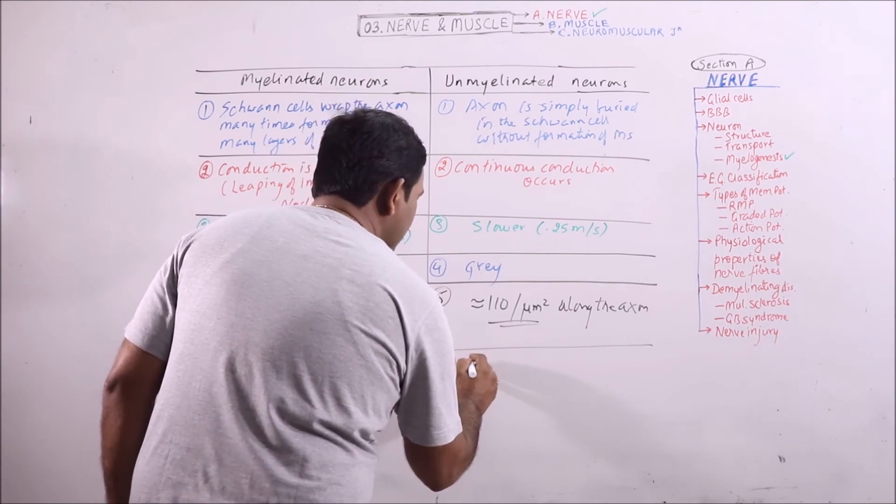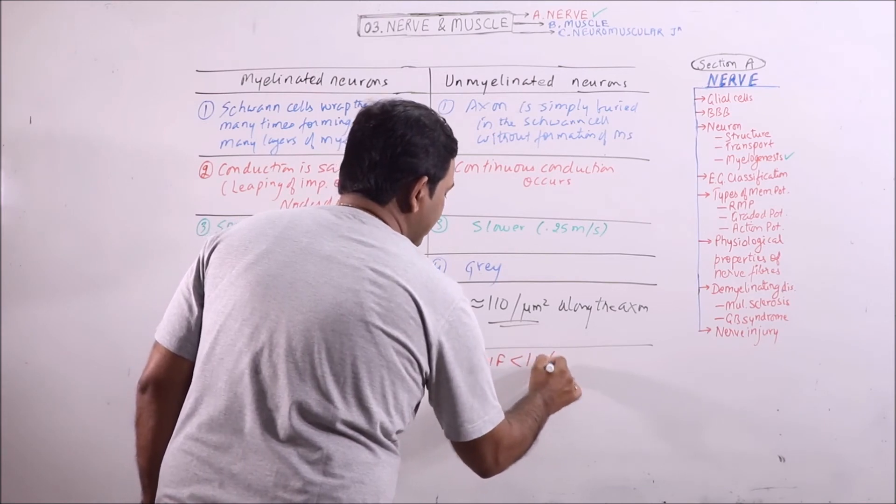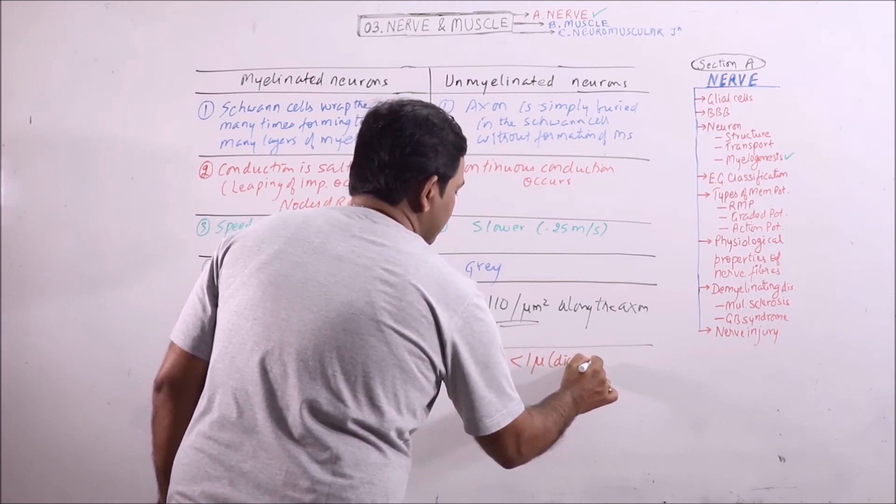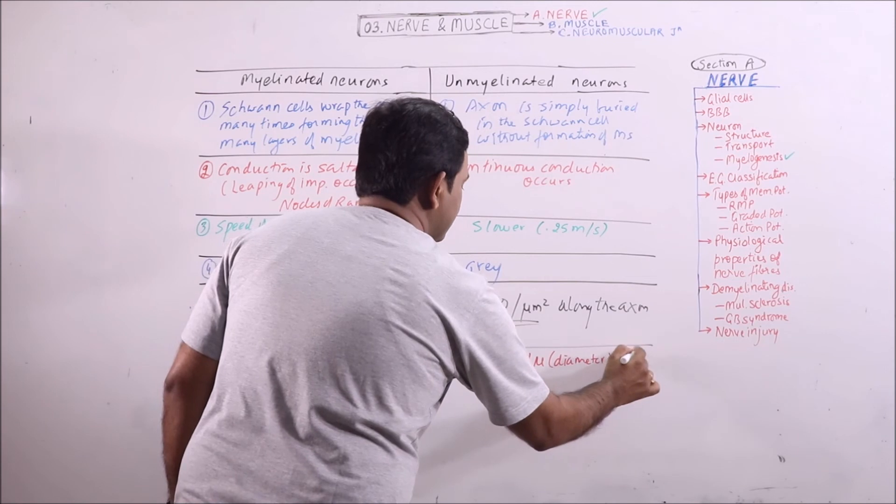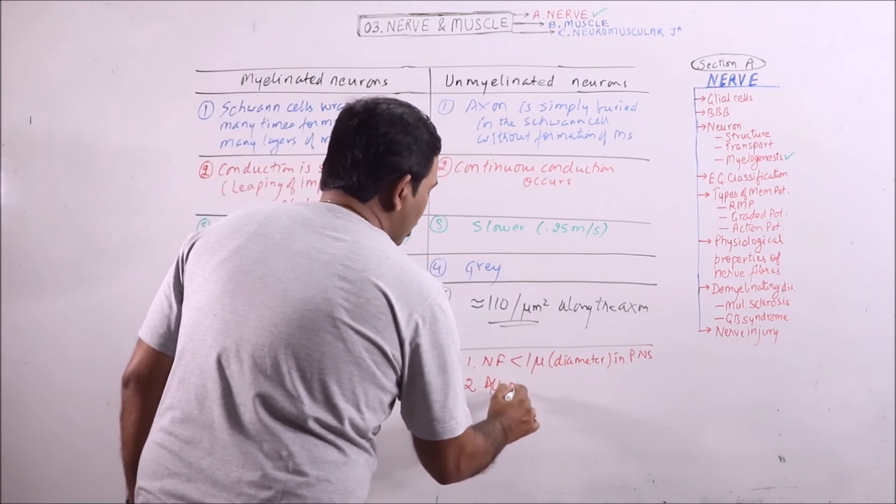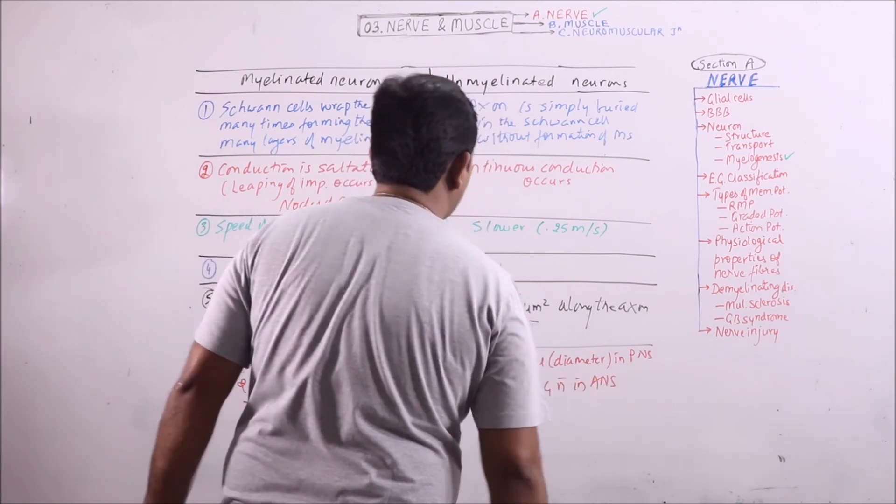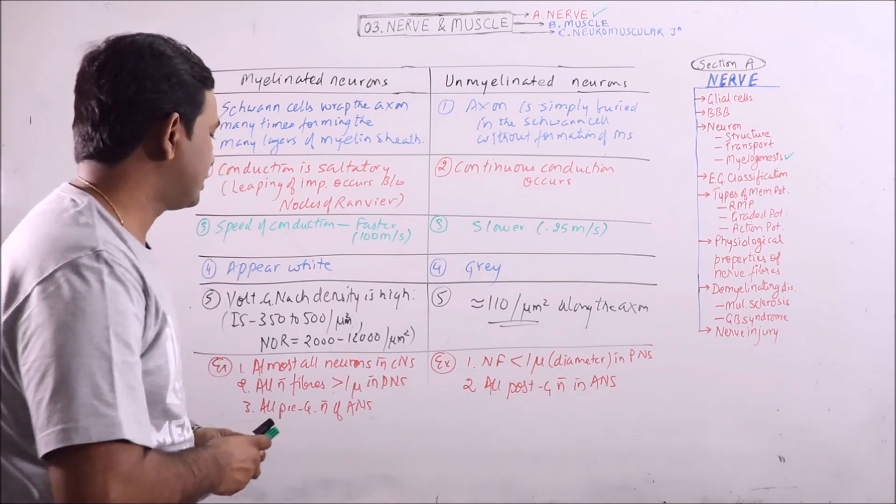While nerve fibers having diameter less than 1 micron in PNS are unmyelinated.